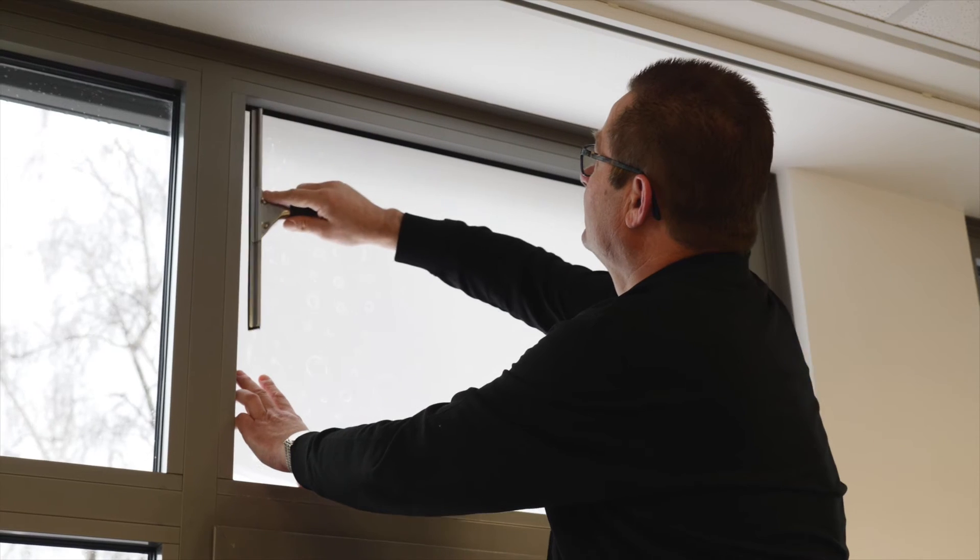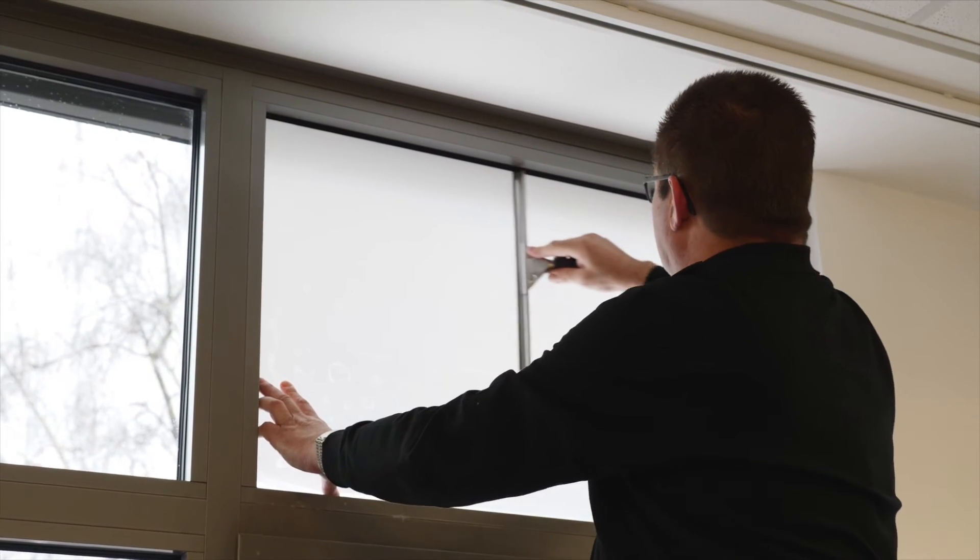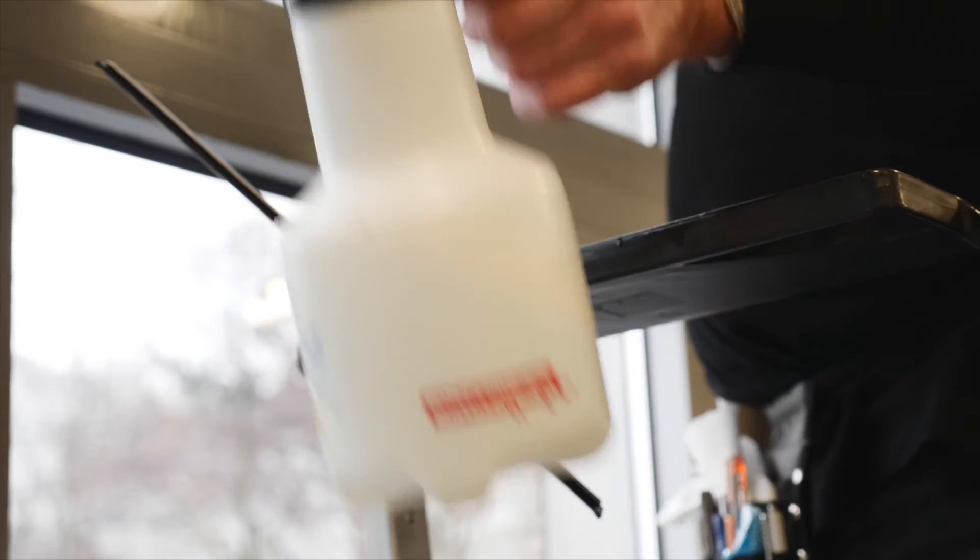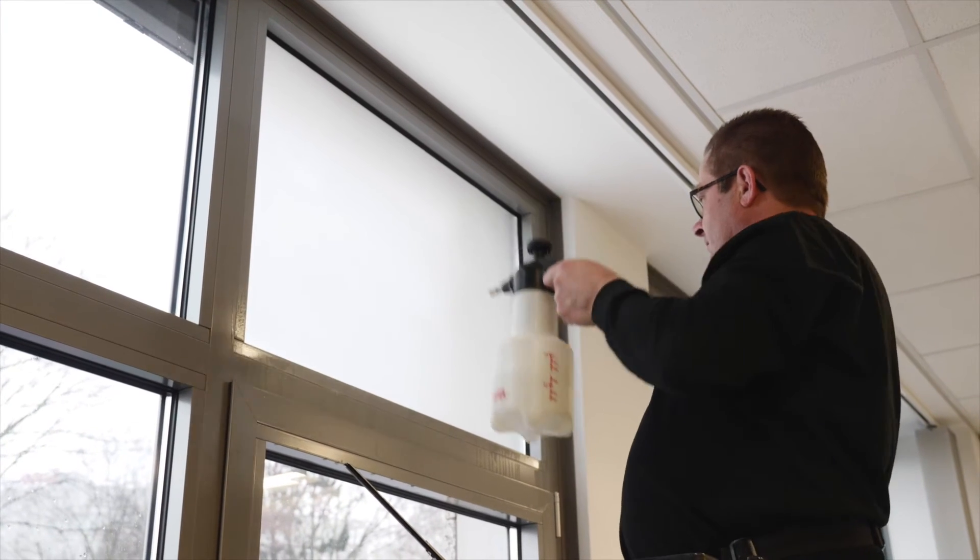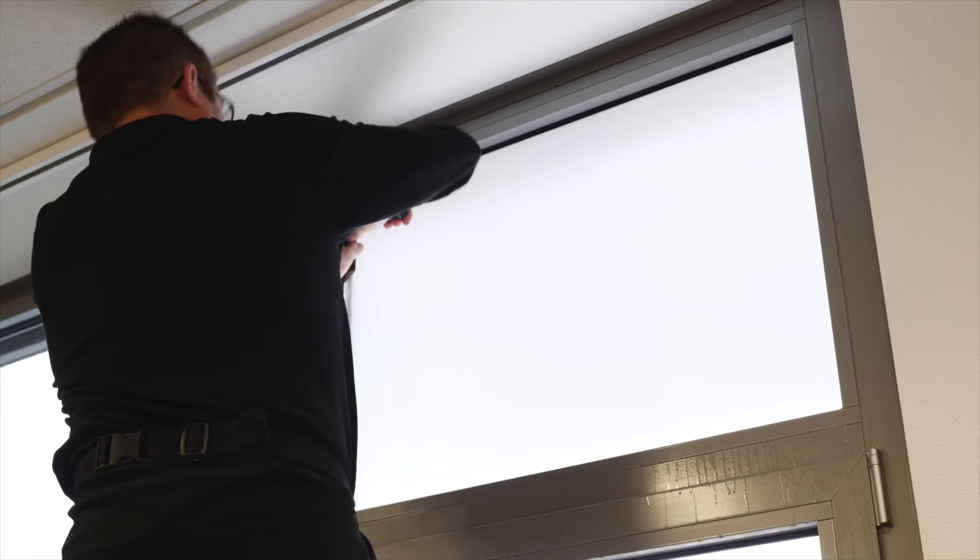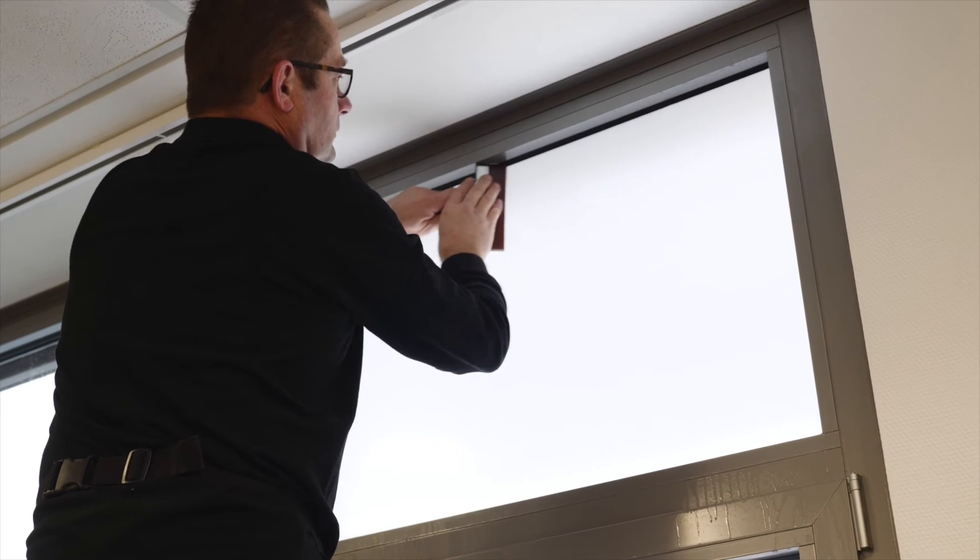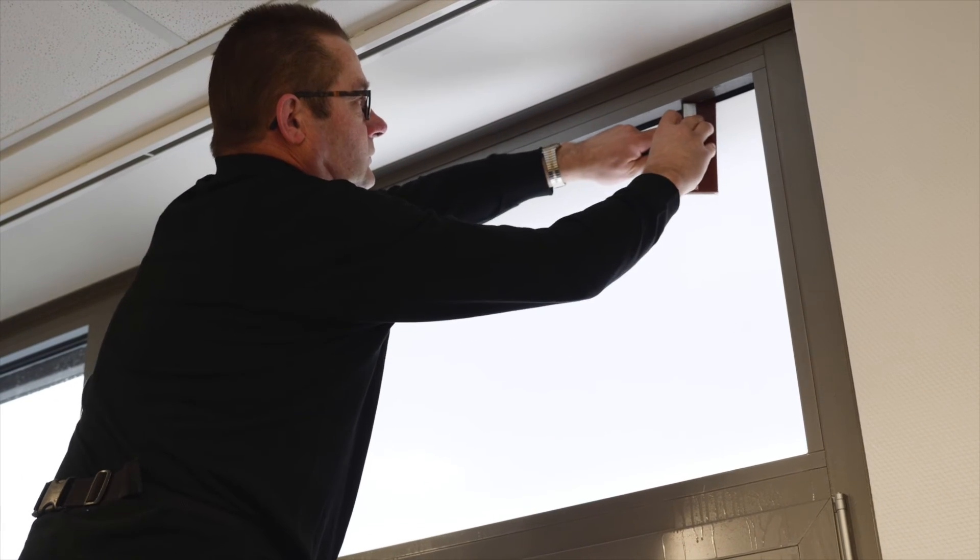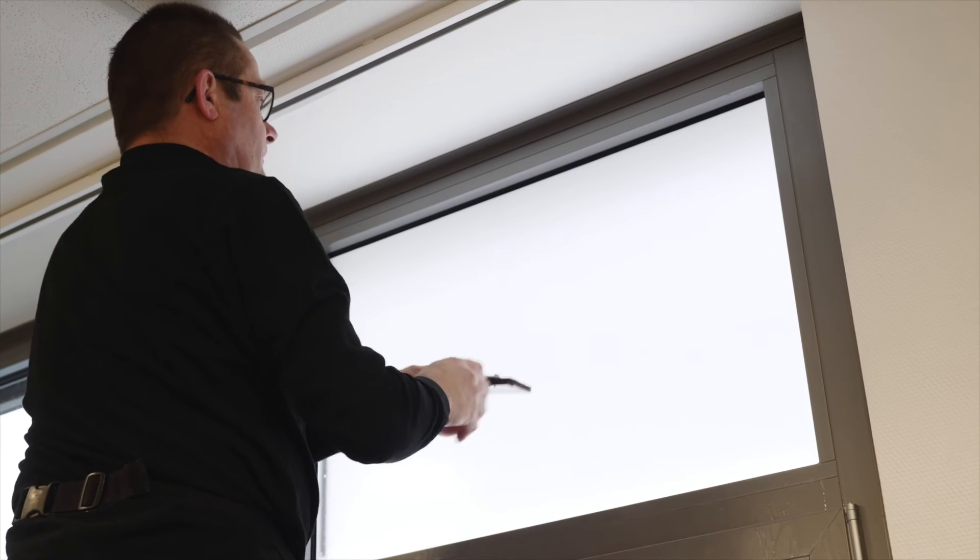Next, use the larger window cleaning squeegee to remove the excess water. Wet the film again and switching to the smaller window film squeegee and using both hands for maximum pressure, remove the remaining water. This is best achieved by starting at the top in the center and pushing the water to the edges on both sides.